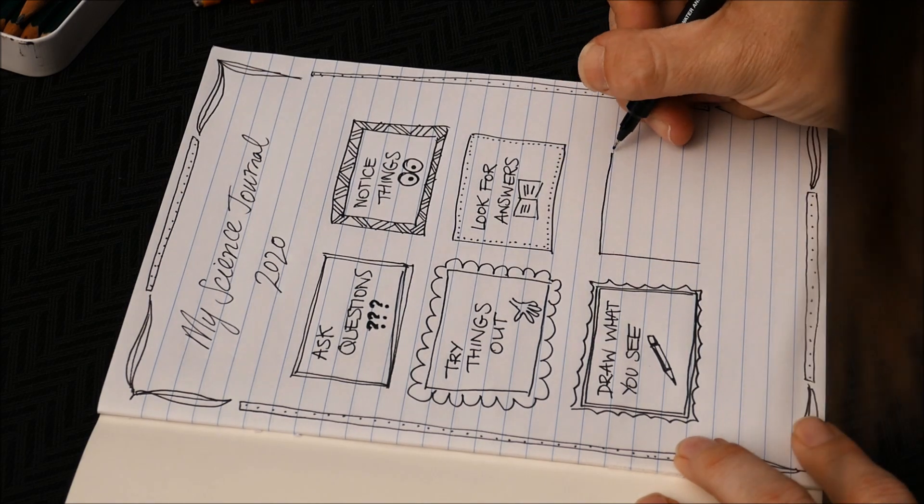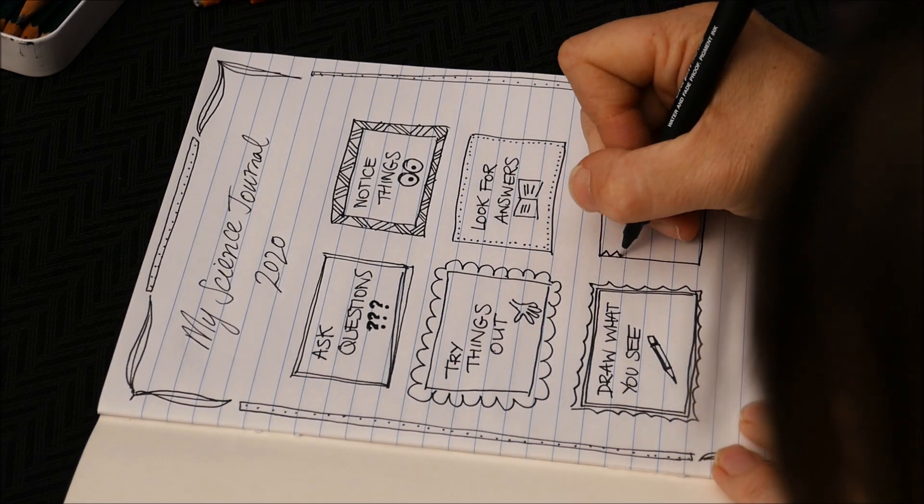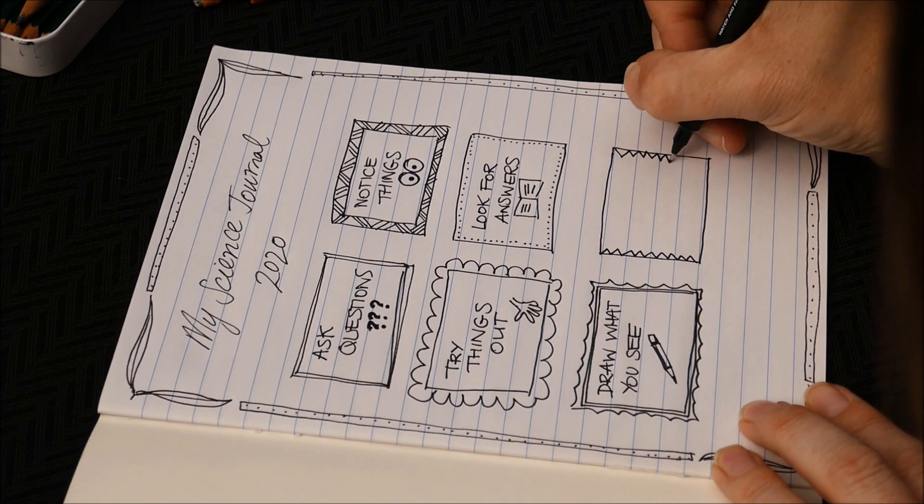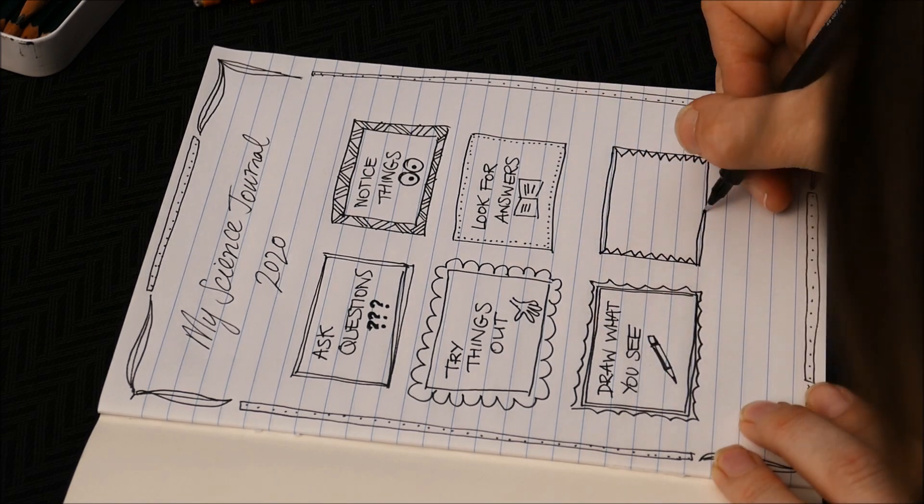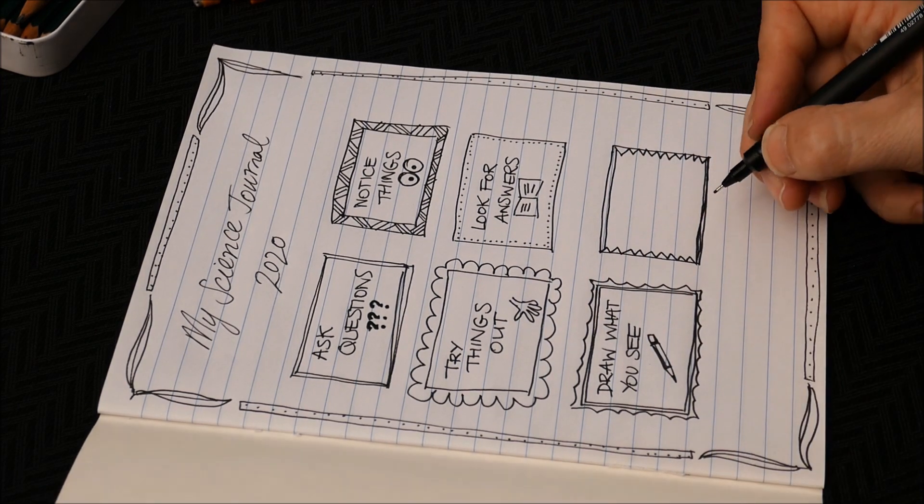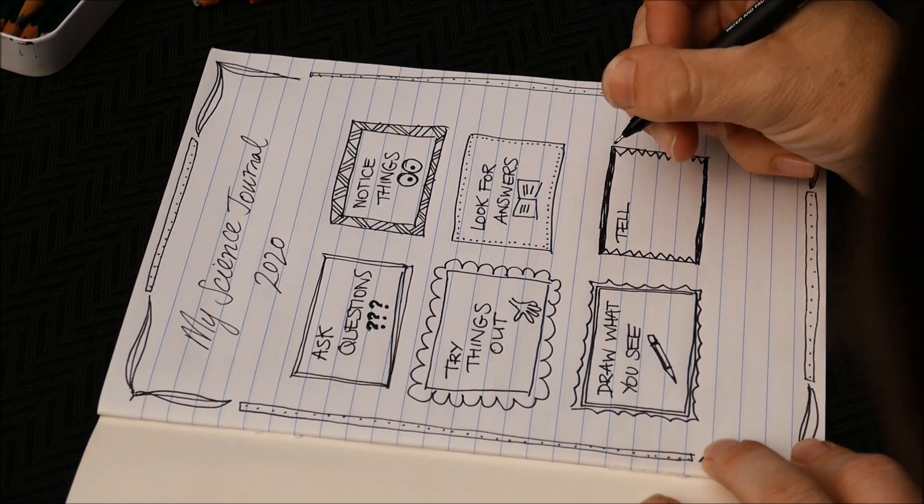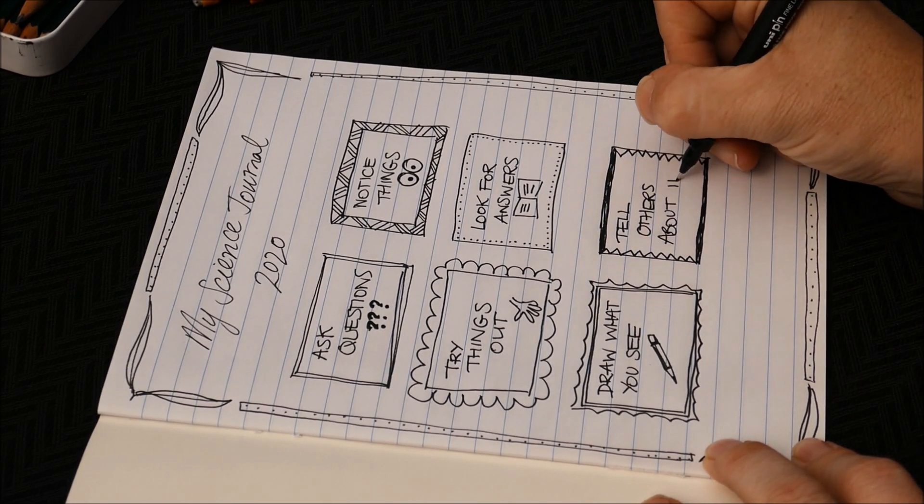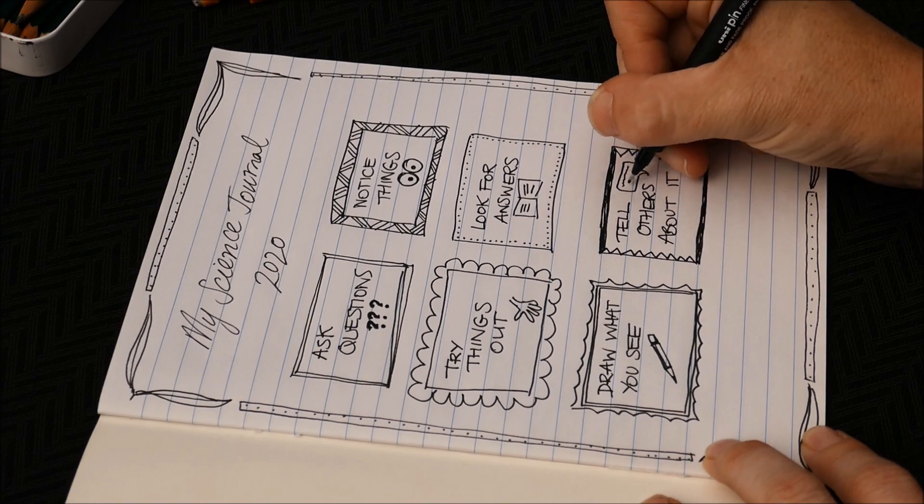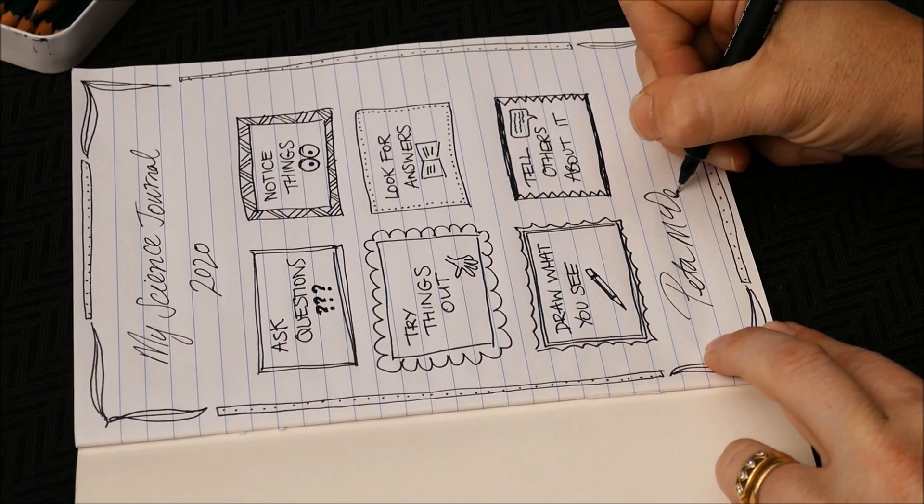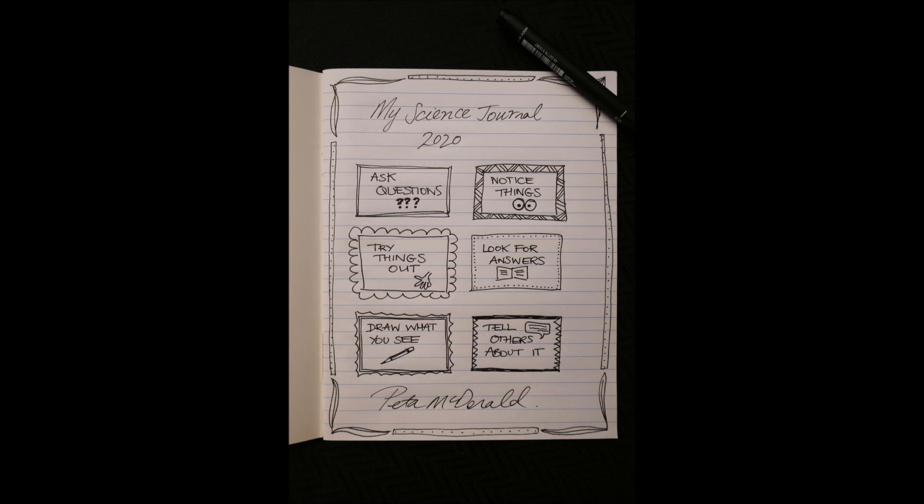Draw what you see. So do pictures of insects, do pictures of trees or things that you notice, things that happen in your kitchen when you're cooking. Any of that kind of stuff is another good thing to put in your science journal. And finally it's a really good idea to go and tell other people about it. Maybe mum or dad or a brother or sister or you can tell us on Google Classroom too. Put your name at the bottom so you know it's yours and we're going to be using this throughout the term.